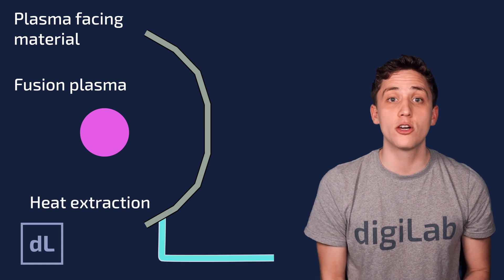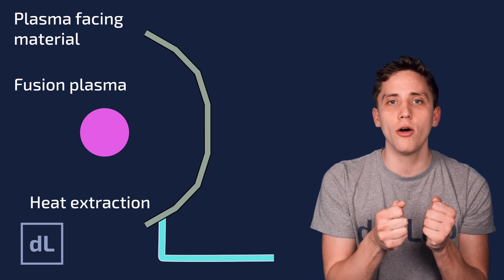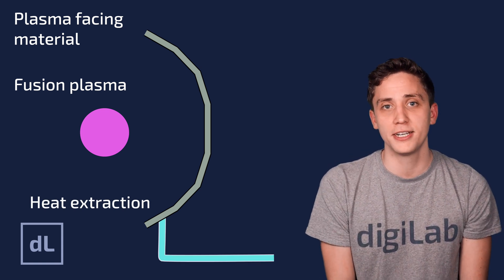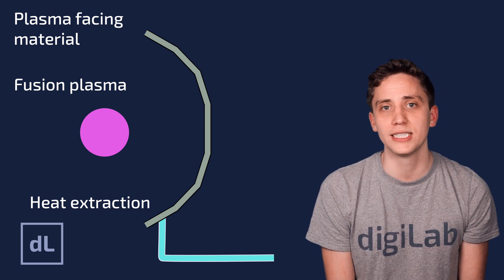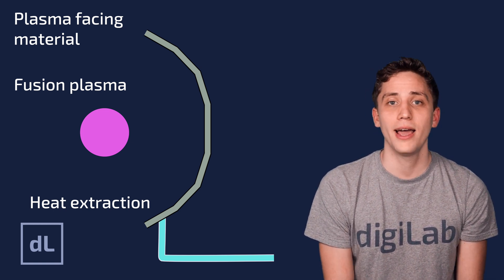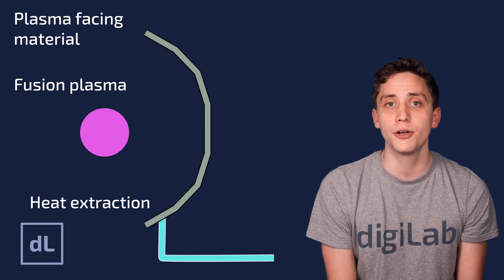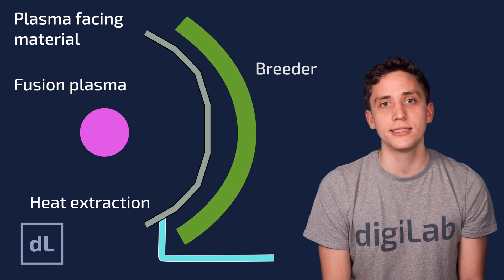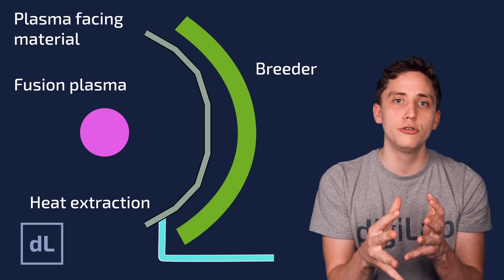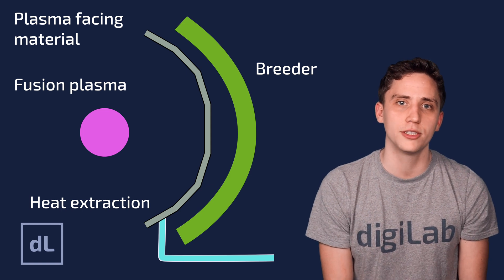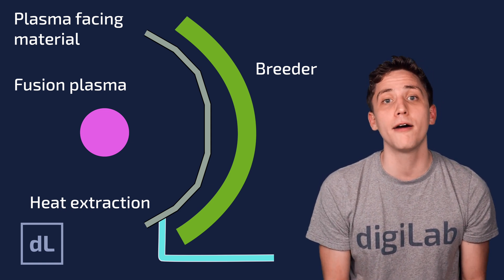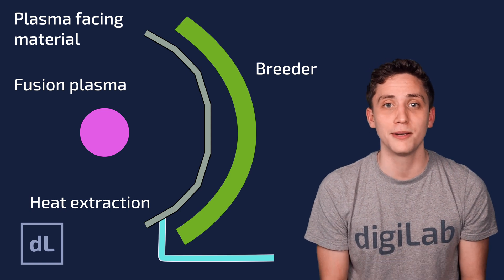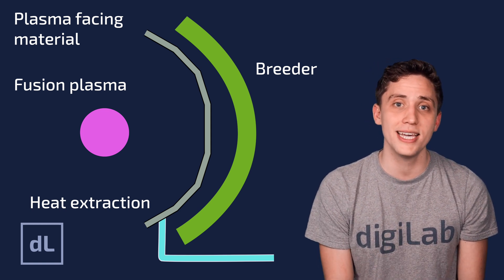Surrounding this will be the cooling systems, which draw those heat loads away from the plasma-facing material and towards the heat exchanging and conversion systems to generate electricity. And for DT fusion or deuterium-tritium fusion, we're going to need some sort of breeding system, which catches the neutrons produced by the fusion reactions and uses those to make the self-sustaining supply of tritium that, remember, this process really needs.